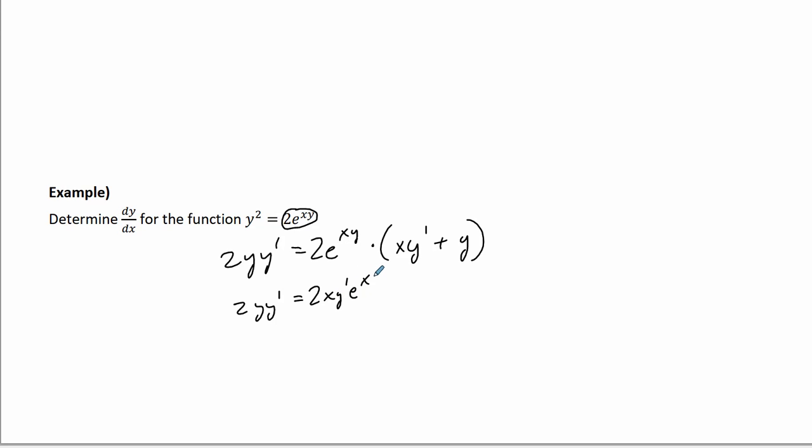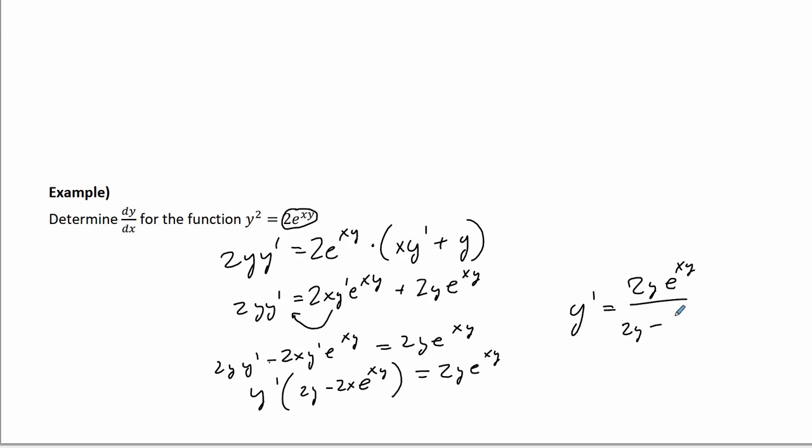So 2y y prime equals 2xy prime e to the xy plus 2y e to the xy. I'm going to bring over the y primes on this side here. So I get 2y y prime minus 2xy prime e to the xy equals 2y e to the xy. I'm going to factor out that y prime times 2y minus 2x e to the xy equals 2y e to the xy. And I'm going to divide by that, so I get y prime equals 2y e to the xy over 2y minus 2x e to the xy. And that is your implicit differentiation. That's the curve, the derivative at that curve, whatever point we want to find it.